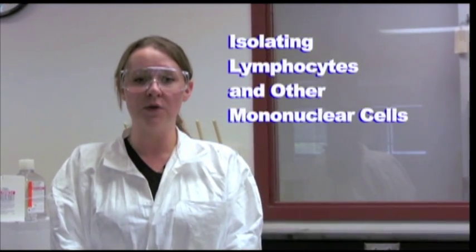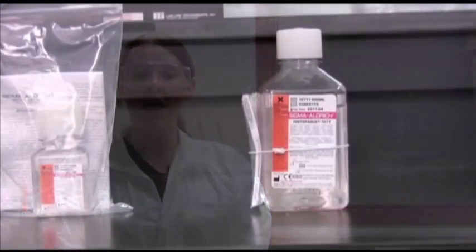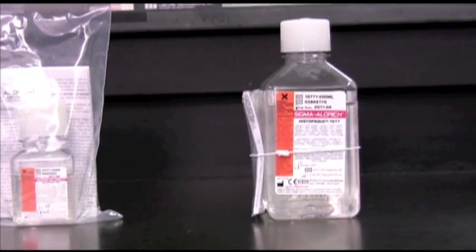Hi, I'm Carrie Cuppinyard, and I'm a scientist at Sigma Aldrich in St. Louis, Missouri. Today we will show you a procedure for isolating lymphocytes and other mononuclear cells from whole blood and bone marrow using the Sigma AccuSpin System Histopac 1077.